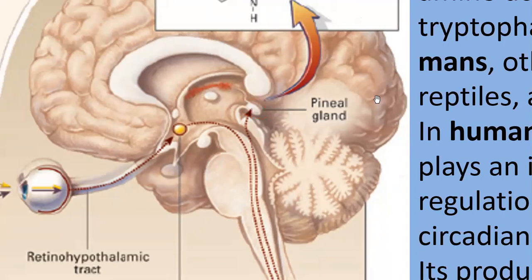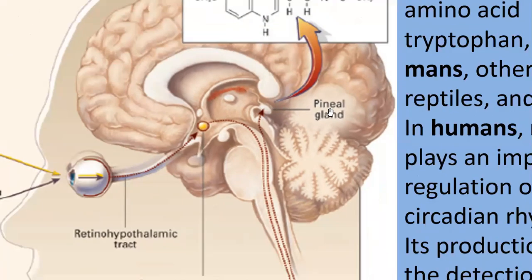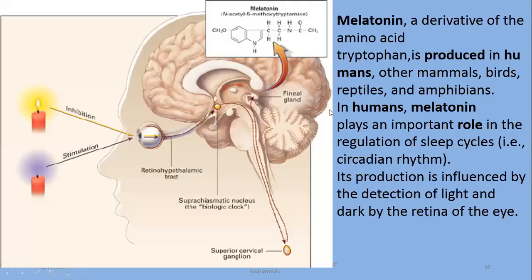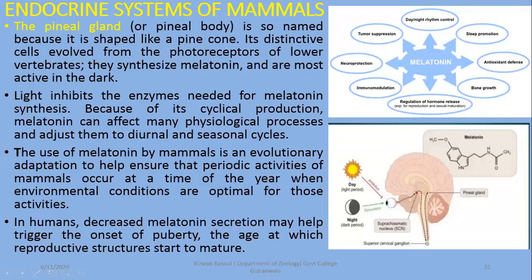The smallest known gland as well as smallest organ of the body is the pineal gland. The third eye is derived from the photoreceptors of lower vertebrates — like in reptiles. Those photoreceptor tissues are converted into the pineal gland, and these cells synthesize and form melatonin.